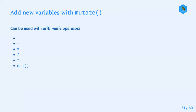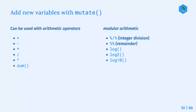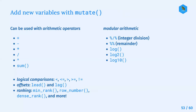Mutate can be used with arithmetic operators - the standard ones: plus, minus, multiply, divide, and the caret for exponentiation. You can also use functions like sum, modular arithmetic with integer division and remainder, and log functions. Other things you can use with mutate include logical comparisons, offsets like lead and lag, and ranking functions like min_rank, row_number, and dense_rank.